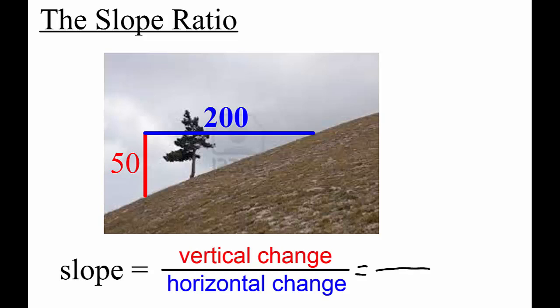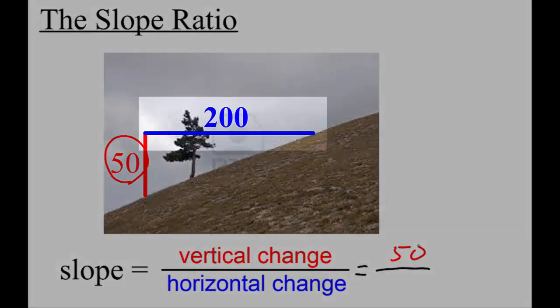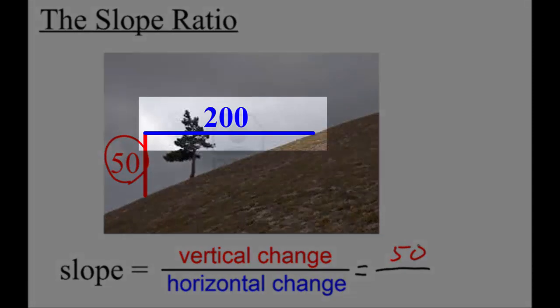The slope of this hill is 50 over 200 because the vertical change is 50 and the horizontal change is 200.